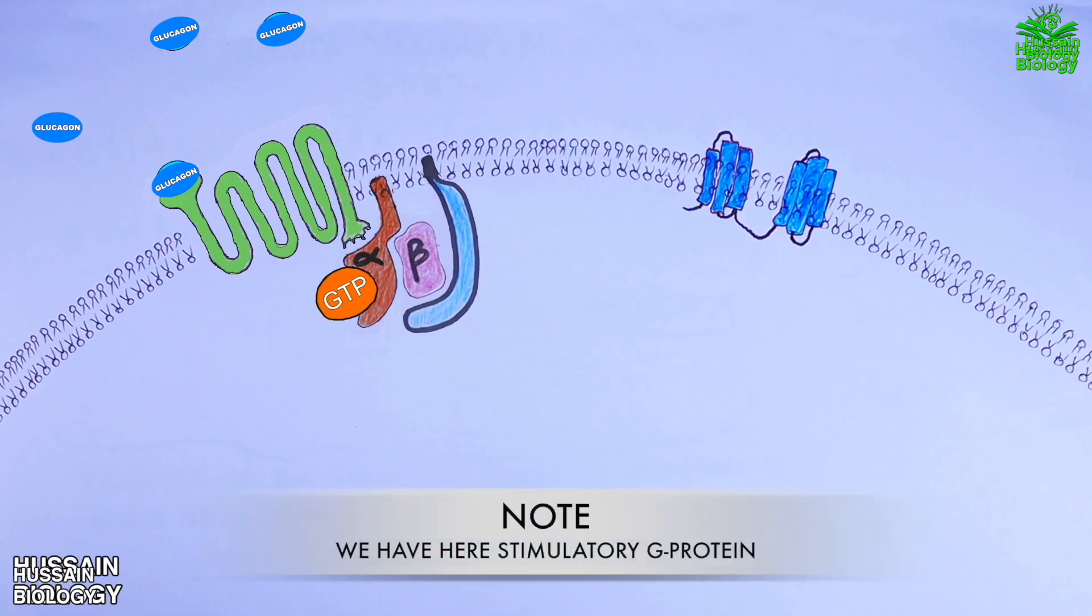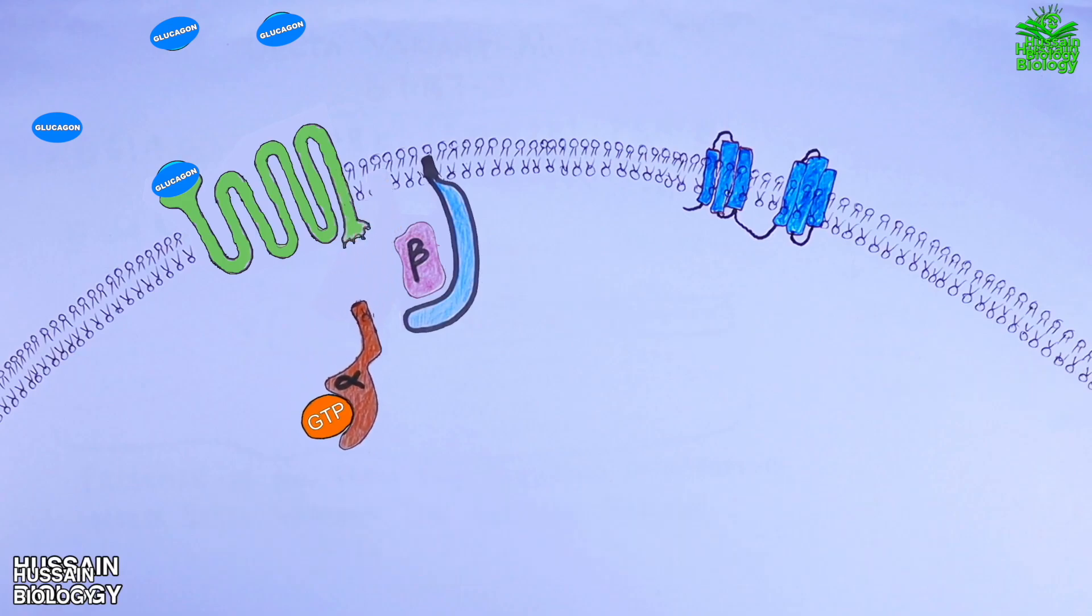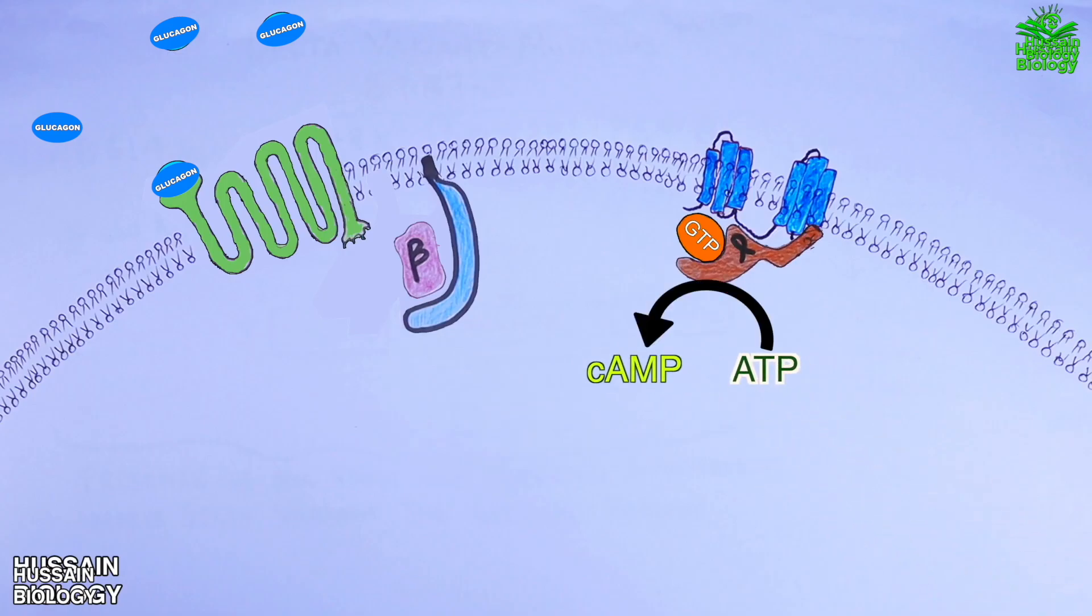Once the G protein, that's G alpha protein, is GTP bound, it gets to the adenylyl cyclase and activates it as shown in the diagram, where we can see the conversion of ATP to cAMP molecules. Now we have the cAMP molecule, which is a secondary messenger in this pathway.